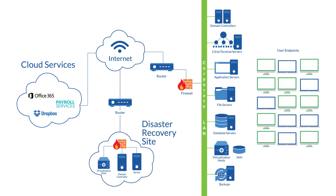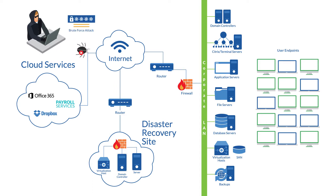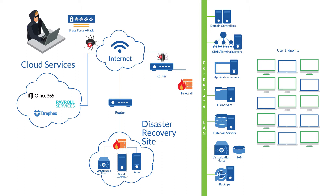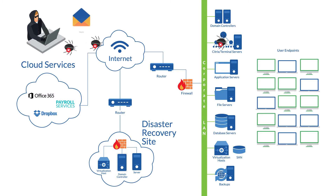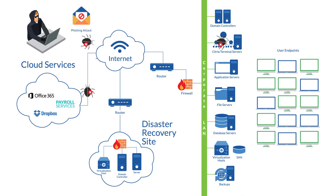Let's look at two common attacks. In a brute force attack, cybercriminals attempt to log into your systems through open ports like RDP until they successfully enter the network using common account names. Phishing attacks send an email appearing to come from a trusted source, that sends users to a malicious website that asks for their credentials.